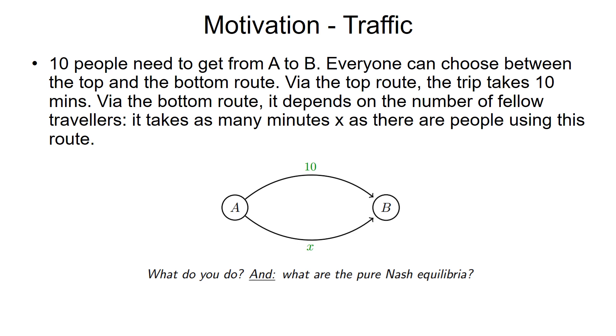Let's have a motivational example called traffic. Ten people need to go from A to B. Everyone can choose between the top and the bottom route. Via the top route the trip takes ten minutes, maybe it's a highway, very good road. Via the bottom route it depends on the number of fellow travelers - it takes as many minutes as there are people using the route. What do you do and what are the pure strategy Nash equilibrium? Interesting problem, right?